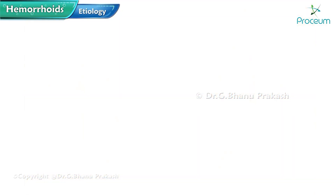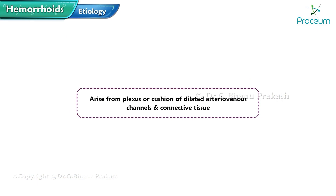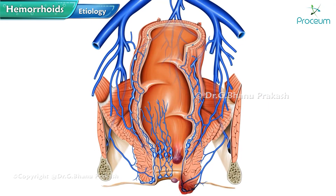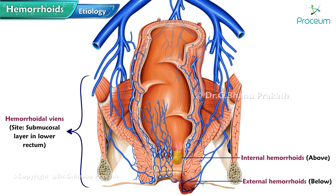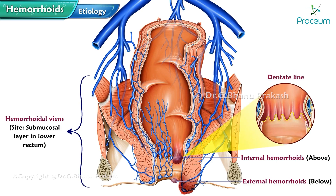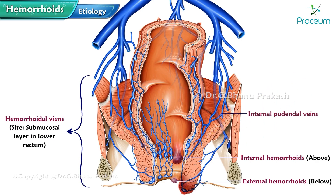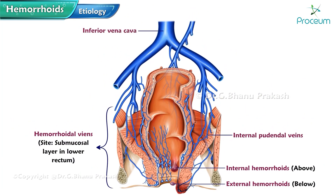Hemorrhoids arise from a plexus or cushion of dilated arteriovenous channels and connective tissue. Hemorrhoidal veins are normal anatomic structures located in the submucosal layer in the lower rectum and may be external or internal based on whether they're below or above the dentate line. Both types of hemorrhoids often coexist; internal and external hemorrhoids communicate with one another and drain into the internal pudendal veins and ultimately the inferior vena cava.